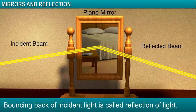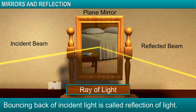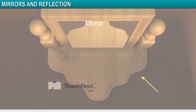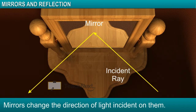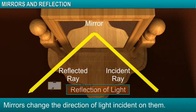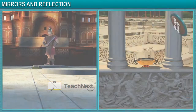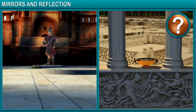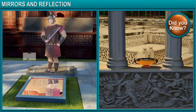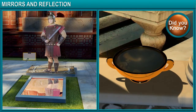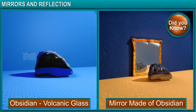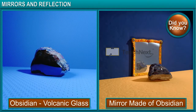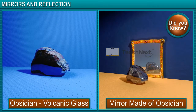The path along which light travels is called a ray of light. Basically, mirrors change the direction of light rays incident on them. In ancient times, people mostly used pools of still water or water collected in a vessel as mirrors. The first man-made mirrors were in the form of a polished stone made by using obsidian, a naturally occurring volcanic glass.